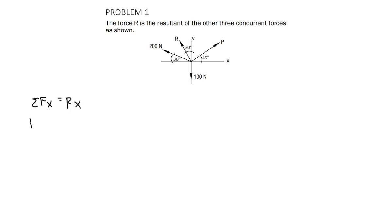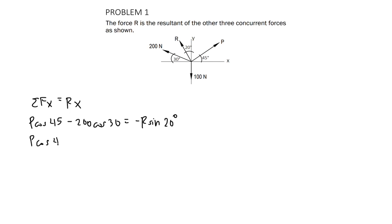So we get P cosine 45 degrees minus 200 cosine 30 degrees is equal to negative R sine 20 degrees. Rearranging, we get P cosine 45 degrees plus R sine 20 degrees is equal to 200 cosine 30 degrees. That serves as our first equation.